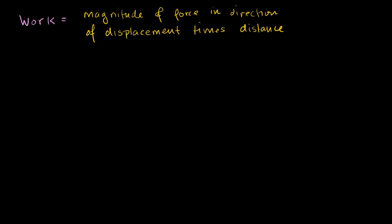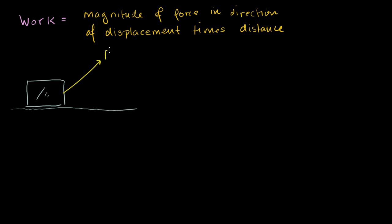The classic example: maybe you have an ice cube or some type of block — I say ice so that there's not a lot of friction, maybe sitting on a lake or sheet of ice. And maybe you're pulling on that ice cube at an angle, like pulling at 60 degrees above horizontal. That is my force vector. Let's say the magnitude of my force vector is 10 newtons, at a 60 degree angle above horizontal. And let's say I displace it.